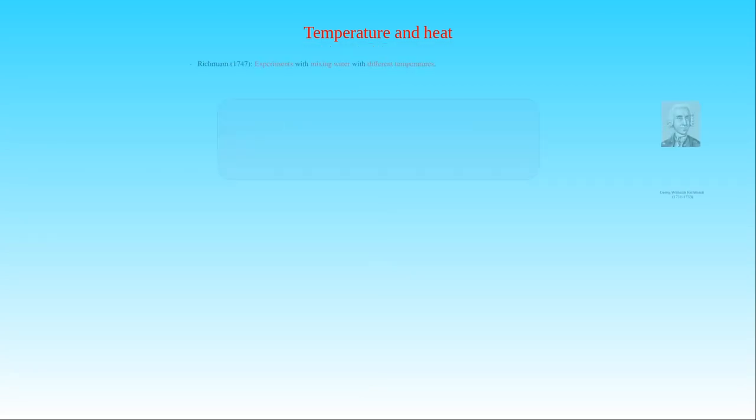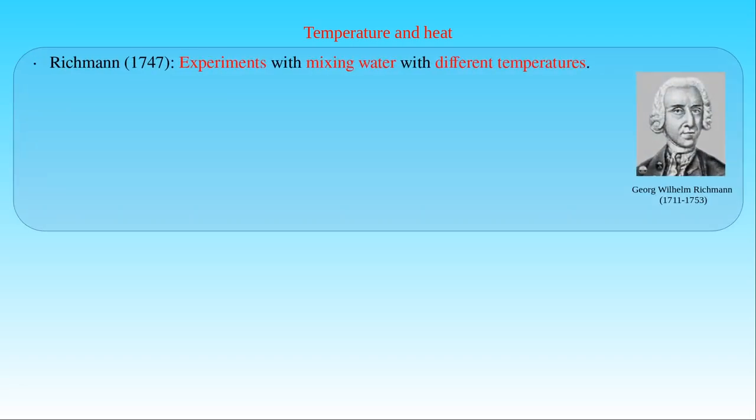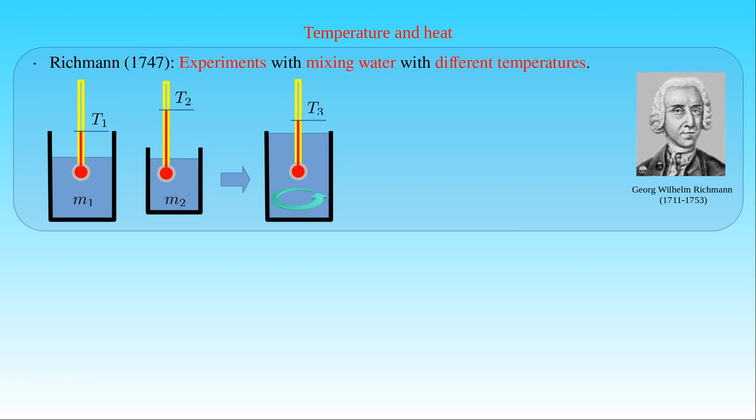Such experiments were performed in 1747 by Georg Wilhelm Richman, a German physicist, who tried to determine the temperature T3 produced by mixing a quantity of water given by mass M1 at temperature T1 with another quantity given by mass M2 at temperature T2. The quantitative description of mixing hot and cold water was a well-known problem at that time, and a formula for the temperature of the mixture was already available. However, there was a discrepancy between the calculations and Richman's experiments. He concluded that T3 equals M1 times T1 plus M2 times T2, divided by M1 plus M2, which is a simple averaging of temperatures weighted by the quantities of water.